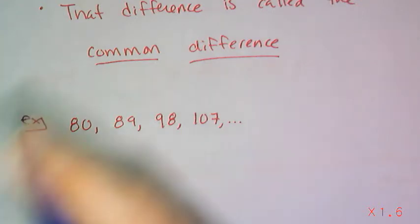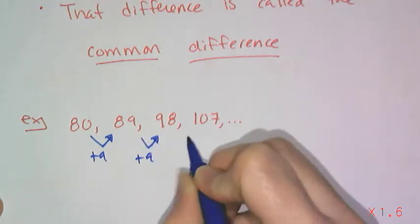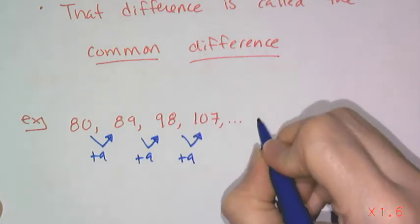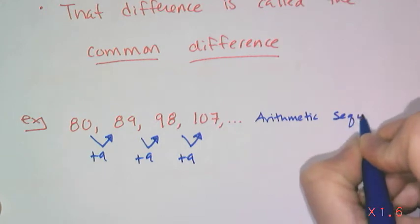Because if I take the difference in those two terms, I get a positive 9. So therefore, this looks like it's going to be an arithmetic sequence.